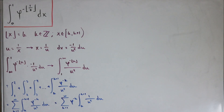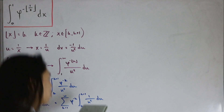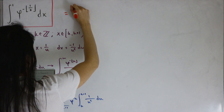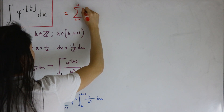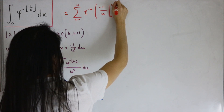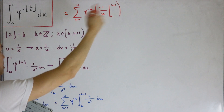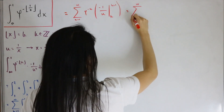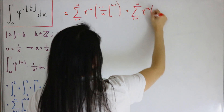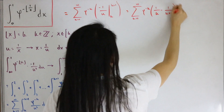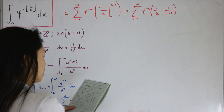The antiderivative of 1/u² is -1/u. Applying the bounds from k to k+1: plugging in, and noting the negatives, we get the infinite sum from k=1 to infinity of φ^(-k) times (1/k - 1/(k+1)).